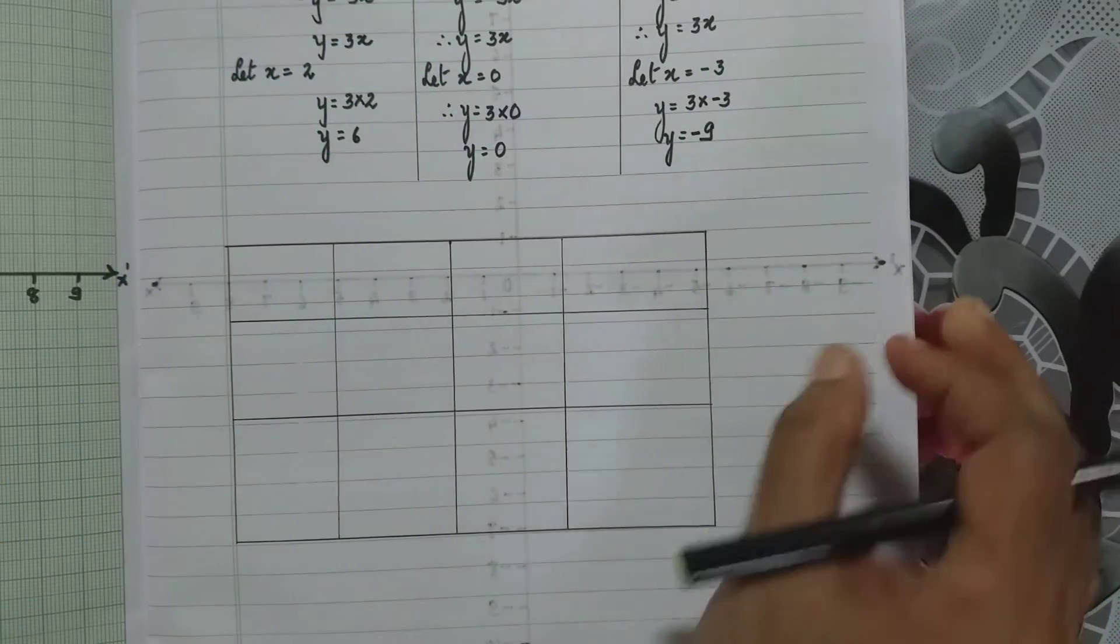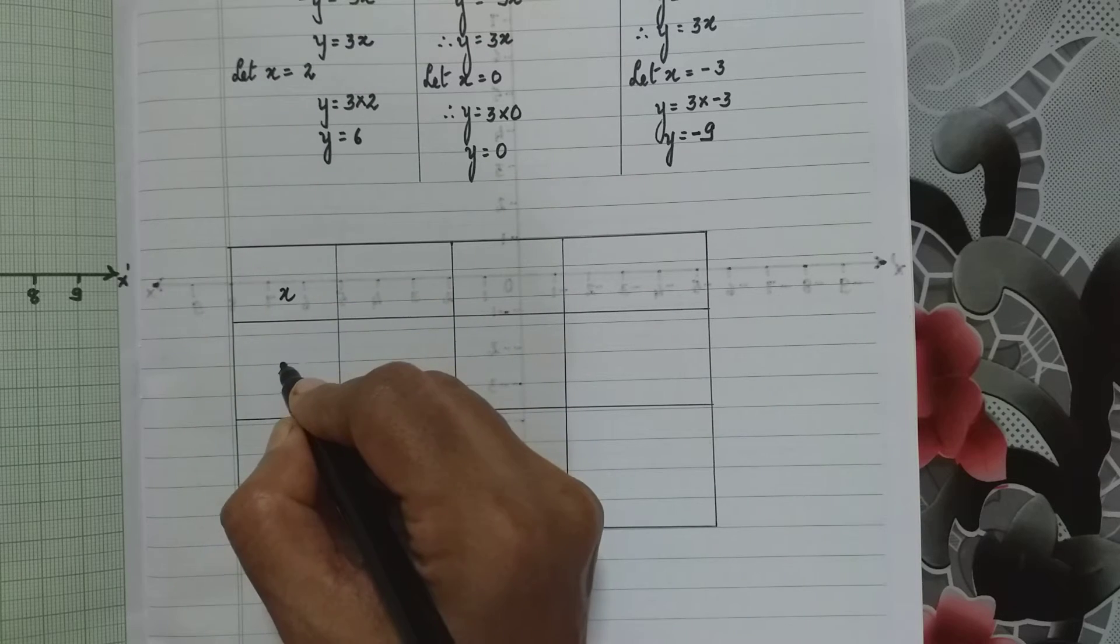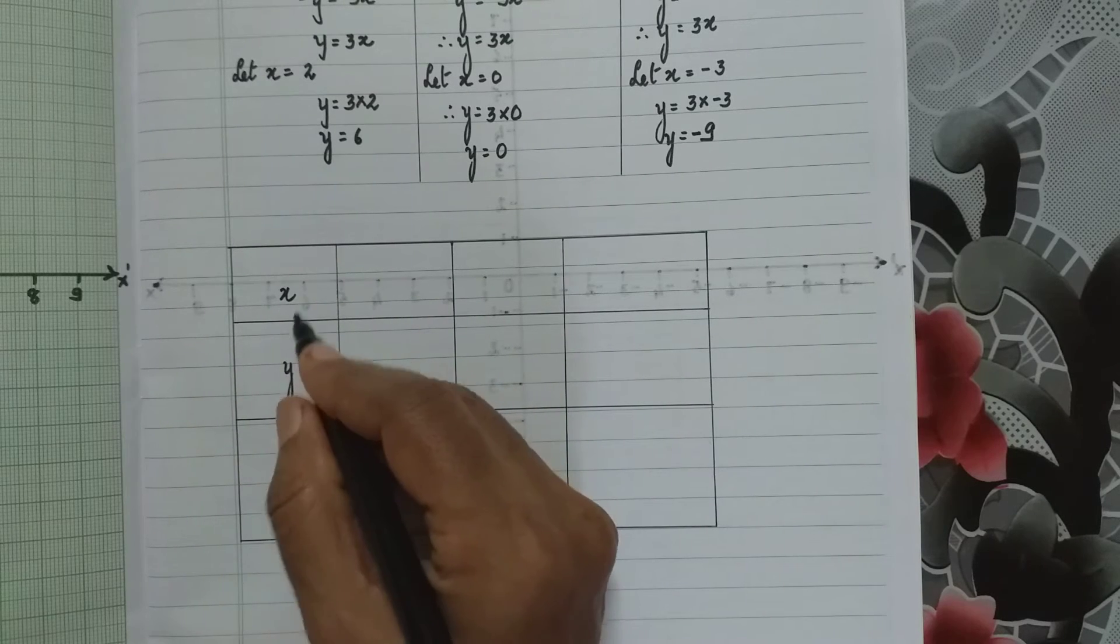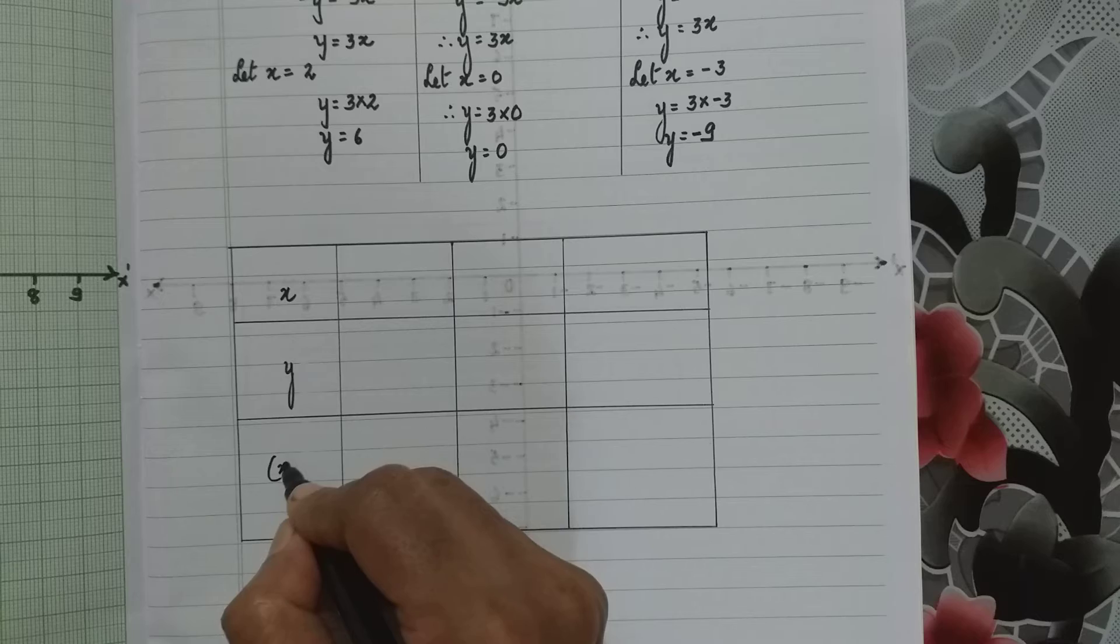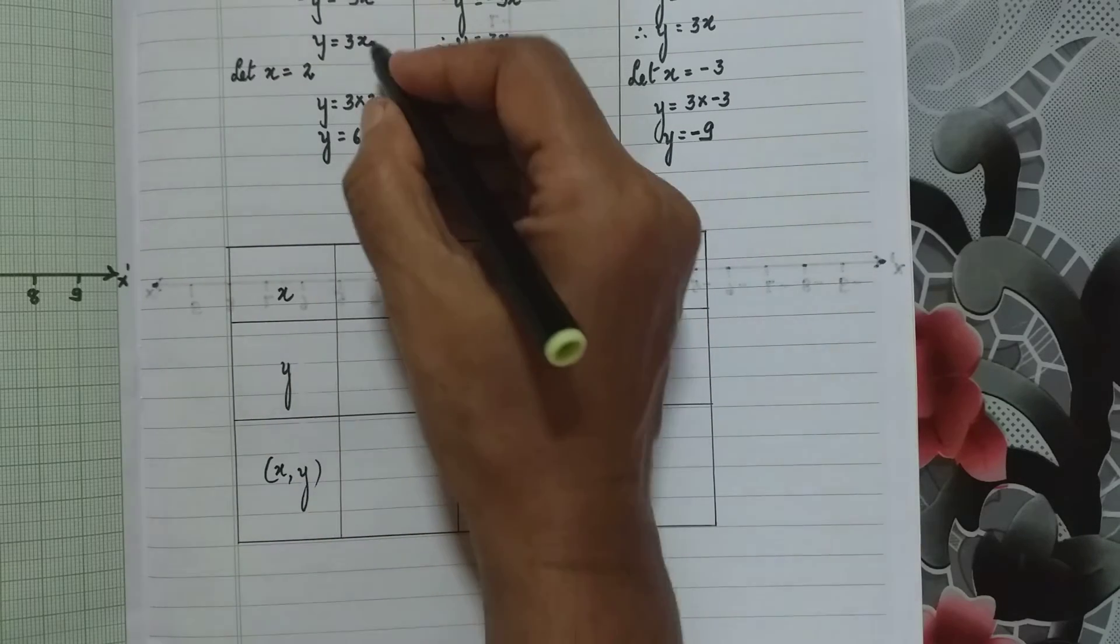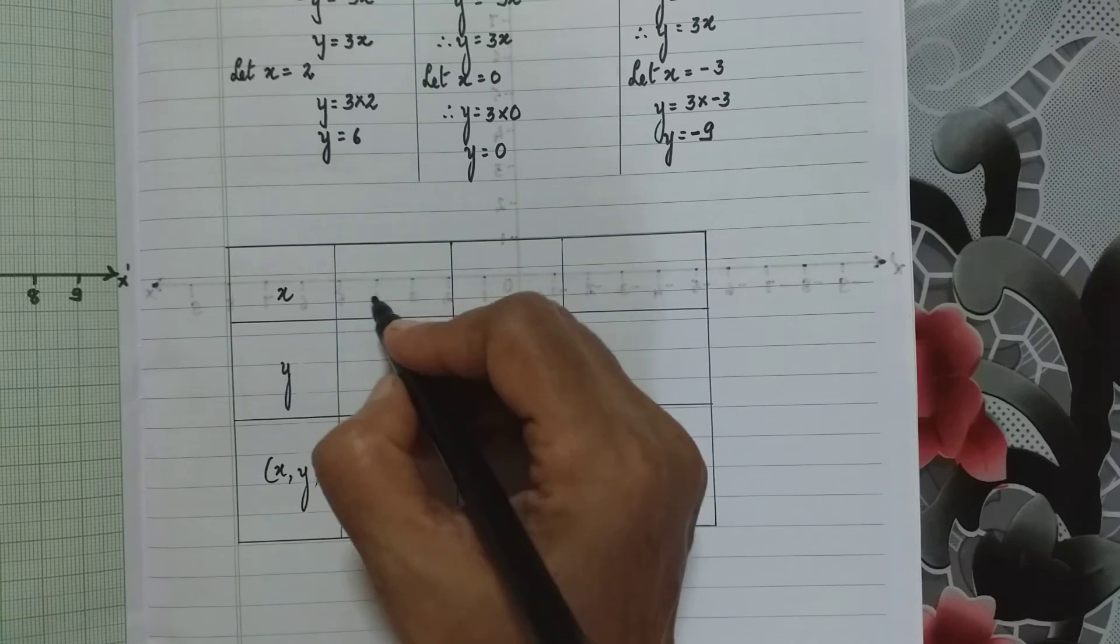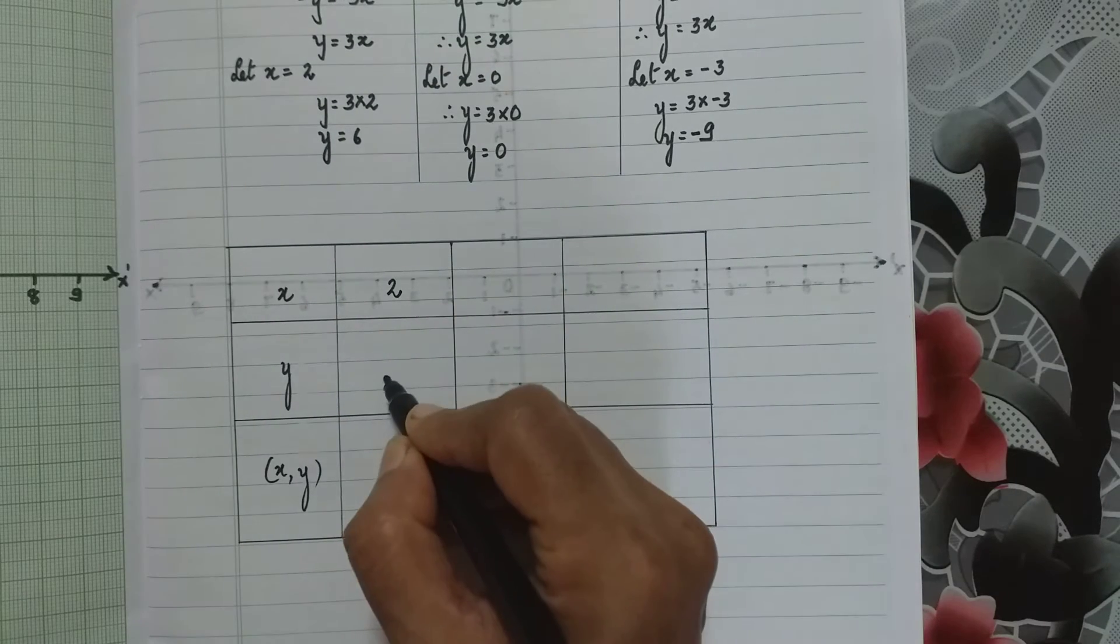Now I have to put the values in my table. So when we put the values, how do we put? First the x value, then the y value, then the coordinates together - x value and y value. If the x value is 2, the y value is 6. So here 2 and 6.